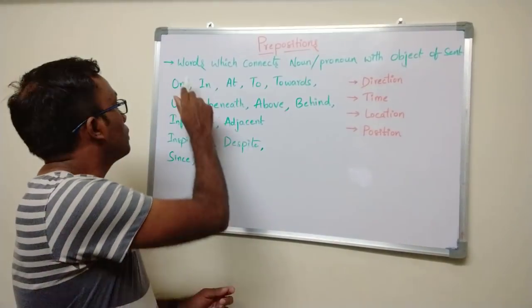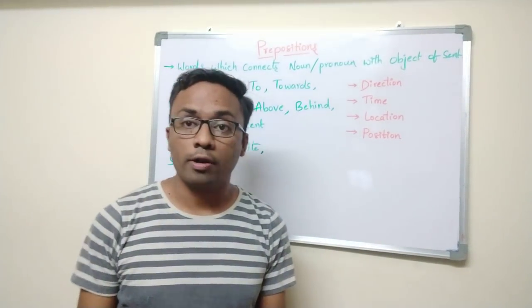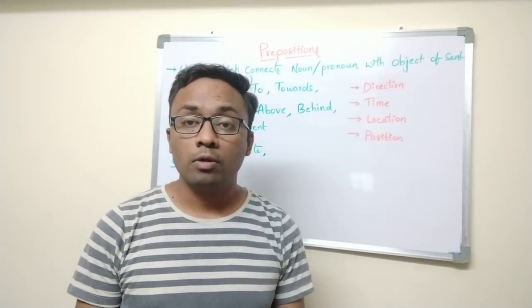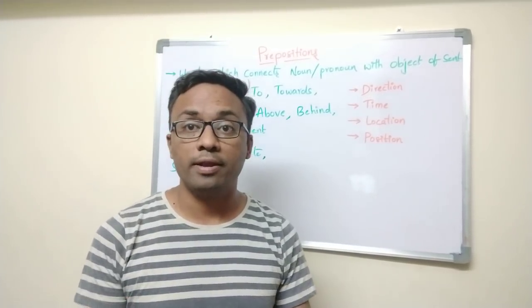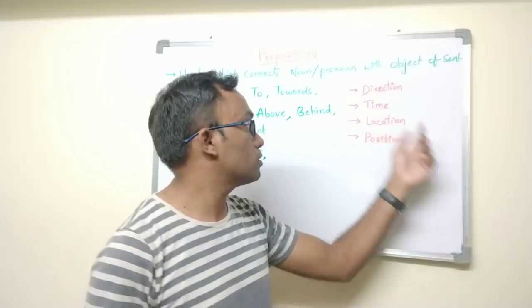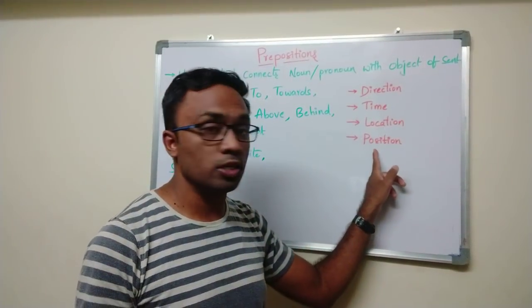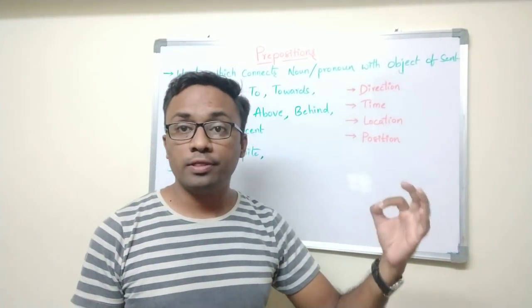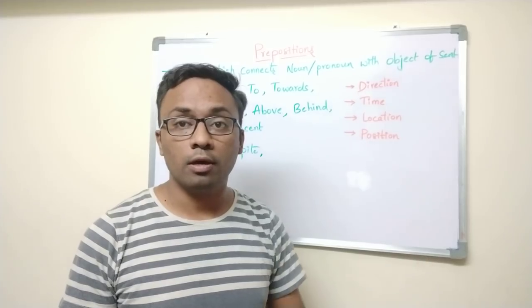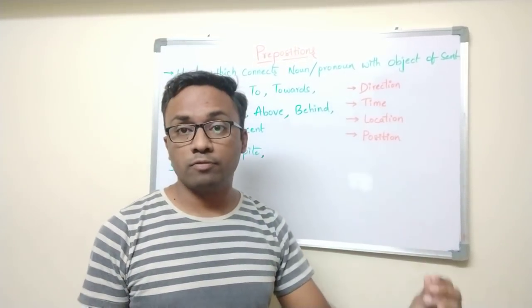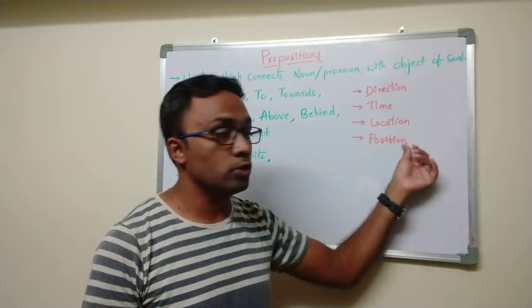We can only pick the most used ones in terms of competitive exams as well as in terms of speaking. So let us take some basic prepositions which keep on occurring in our day-to-day life. How many areas are the prepositions expanded to? Please focus on this: direction, time, location, position. Either we are specifying the direction of the particular noun in relation to the object, or time of something, location of something or place, and position.